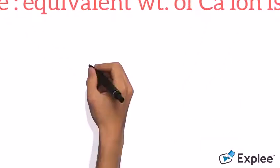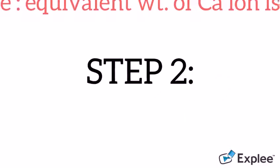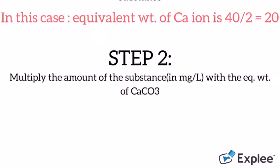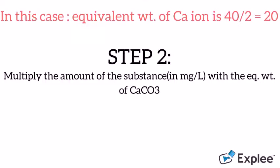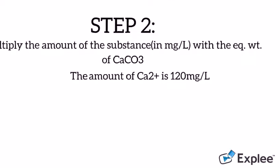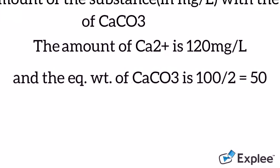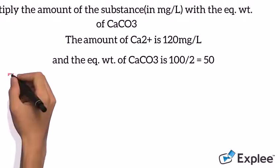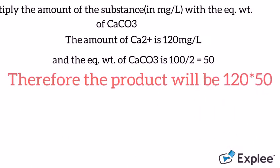Step 2 is to multiply the amount of the substance in mg per liter with the equivalent weight of CaCO3. The amount is given as 120 mg per liter and the equivalent weight of CaCO3 is 100 by 2 which is 50. So in this case, the product will become 120 into 50.